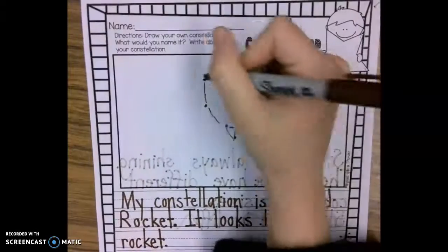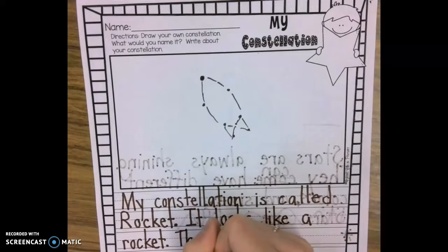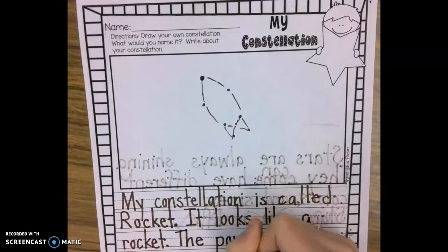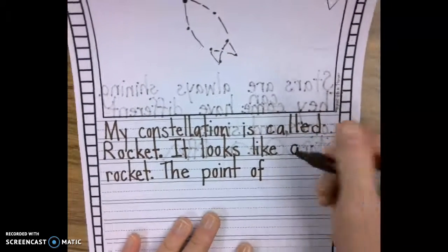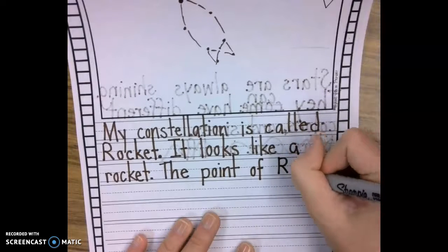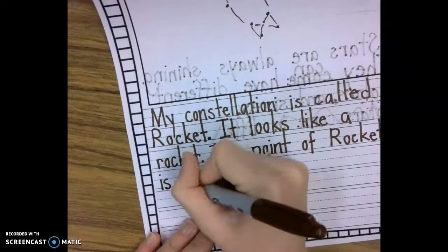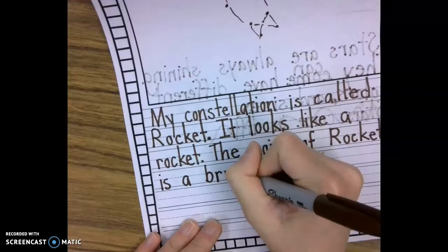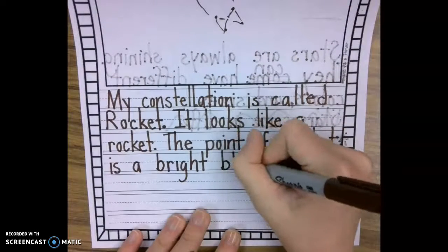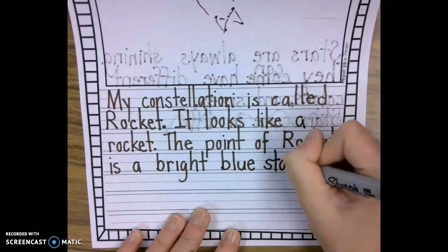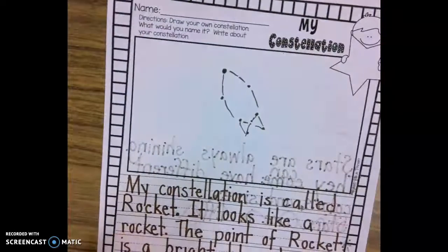And maybe you even want to say, the brightest star. The point of rocket is a bright blue star. I'm going to call it a blue star just for fun because we're just pretending here. This isn't real. It can be anything you like. It could be a purple star, a green star, any of those things. So I said blue.